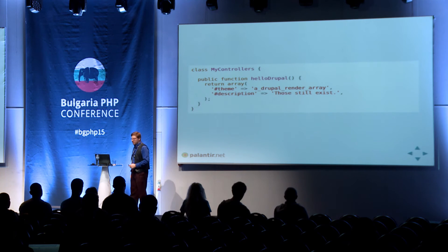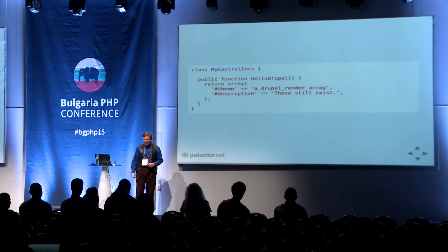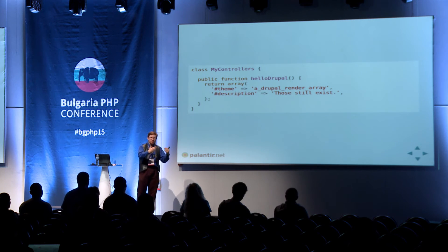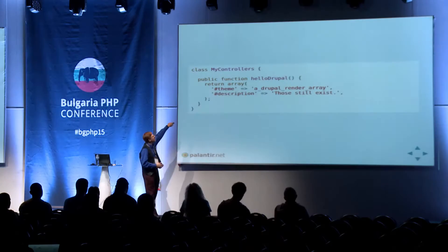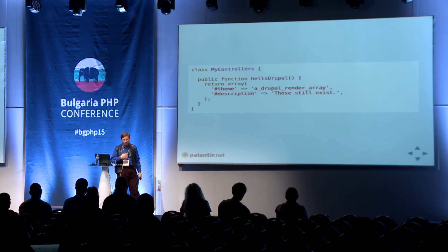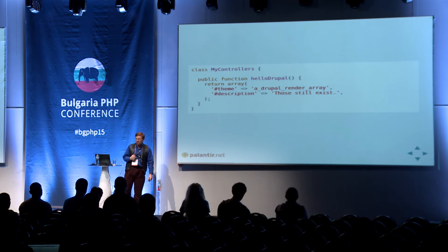In practice though, most of the time you will not be returning a response object, but returning something called a render array. A render array is a Drupalism — for those not used to Drupal, it's kind of like an abstract syntax tree of the data you want rendered. The hash-theme key is the name of a theme key, theme function, or template that will render this data, and the rest are hash-something variables that get passed to the theme system. This is usually what you'll be returning from your controllers.